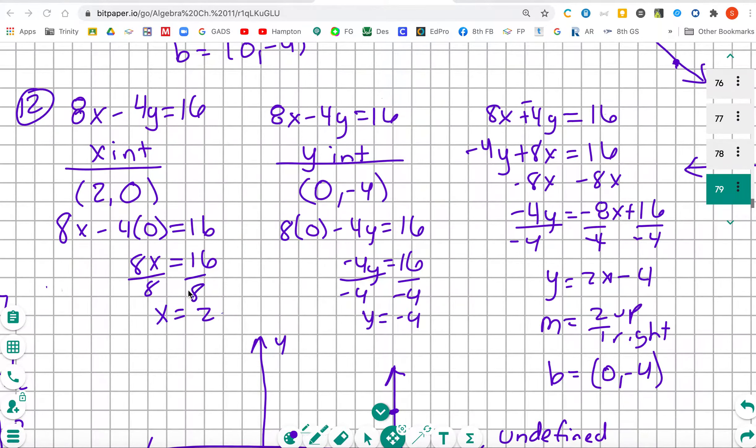8x is equal to 16. You're going to divide by 8. x is equal to 2. So our x-intercept is going to be (2, 0).